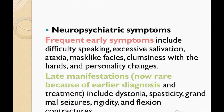Signs and symptoms briefly: there are neuropsychiatric, musculoskeletal, and hematological manifestations. Frequent early symptoms include difficulty speaking, excessive salivation, ataxia, mask-like facies, clumsiness with the hands, and personality changes. Late changes are dystonia, spasticity, grand mal seizures, rigidity, and flexion contractures.